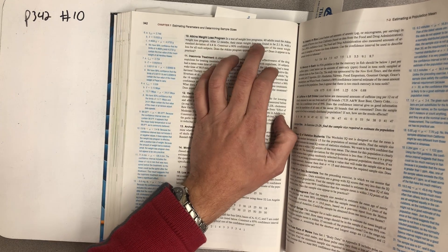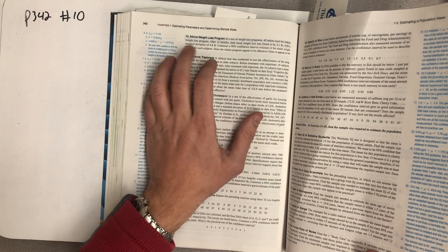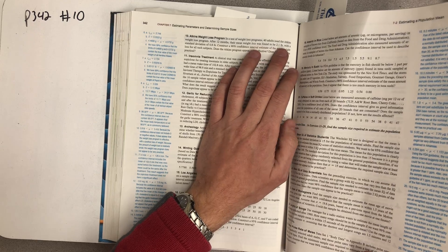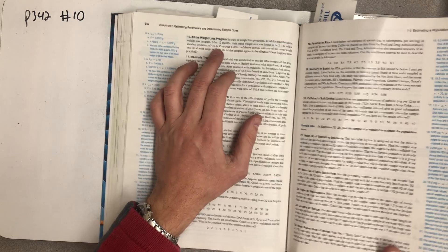In a test of weight loss programs, 40 adults use the Atkins weight loss program. After 12 months their mean weight loss was found to be 2.1 pounds with a standard deviation of 4.8 pounds.